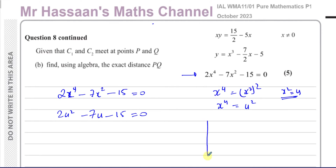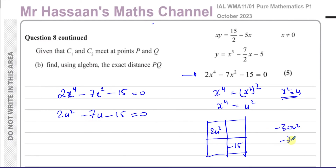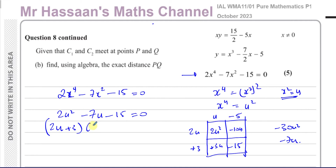We're going to factorize this quadratic. We need to split the middle term — I'll use a grid. Multiplying the first and last terms gives minus 30u squared, and they must add to negative 7u. The right combination is negative 10u and positive 3u. Looking at the row, common factors are 2 and u. This gives the factorization (2u plus 3)(u minus 5) equals 0.